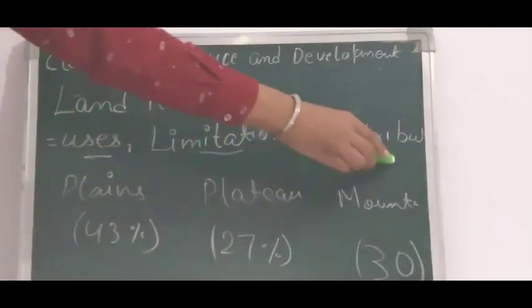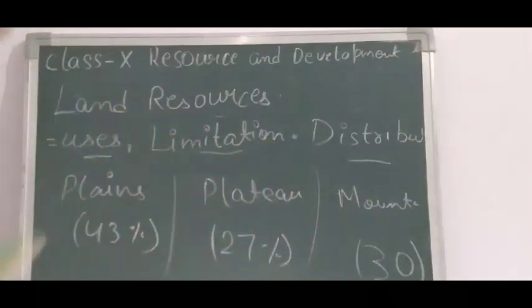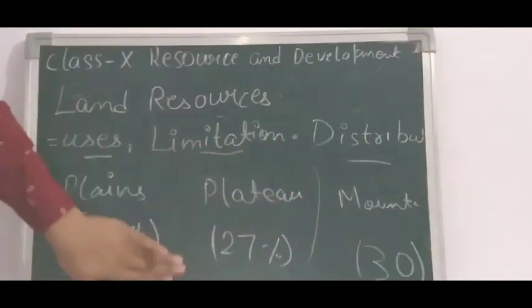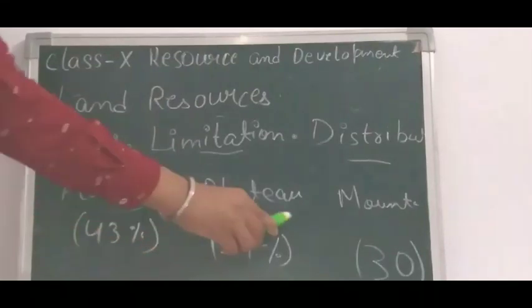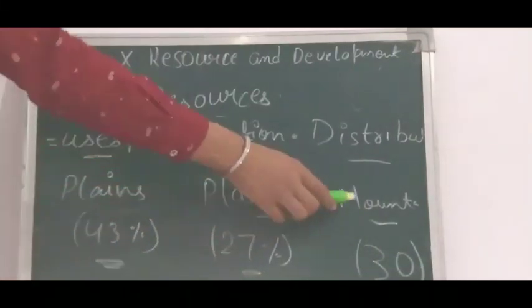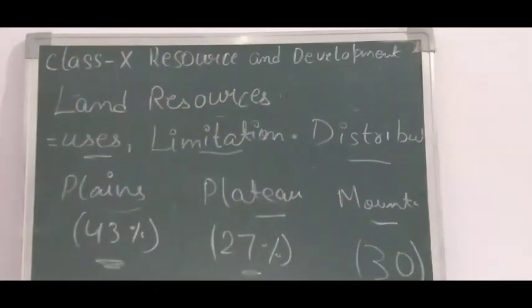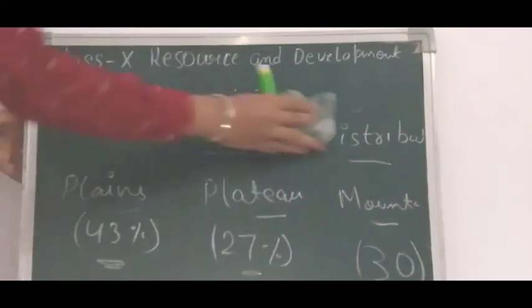There is the distribution of land. India's land has been distributed in three parts. The main parts are plains, plateau, and mountains. Plains area covers 43% of the area.